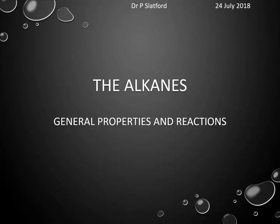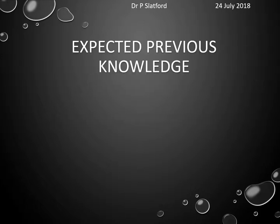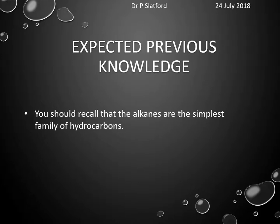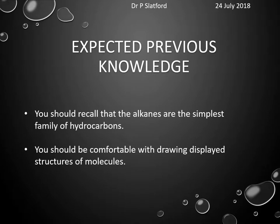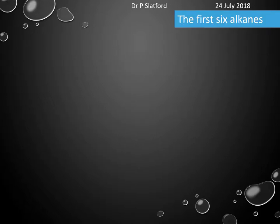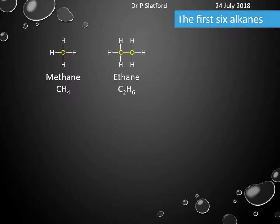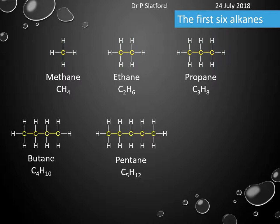Hello and welcome to the next installment of my videos on organic chemistry. We're going to focus on the general properties and reactions of the alkanes. You should know that alkanes are the simplest family of hydrocarbons. The first six alkanes: one carbon and four hydrogens is methane, two carbons is ethane, three is propane, and four is butane.